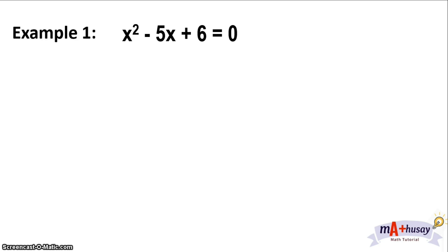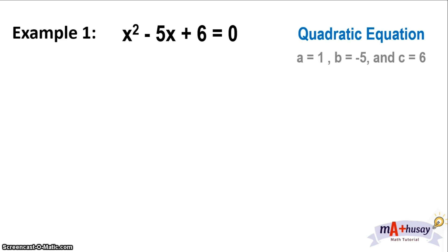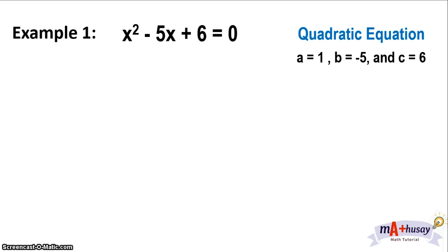Example number one: x squared minus 5x plus 6 equals zero. This is an example of a quadratic equation because the highest exponent is 2. We get the values of A, B, and C: A is 1, B is negative 5, and C is 6. It's easy to identify the values of A, B, and C in the quadratic equation.